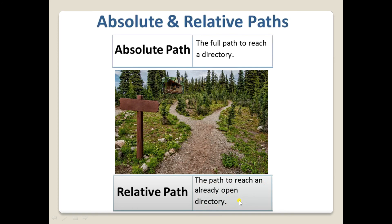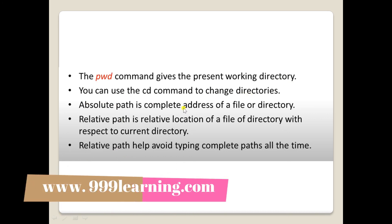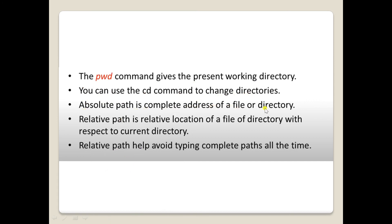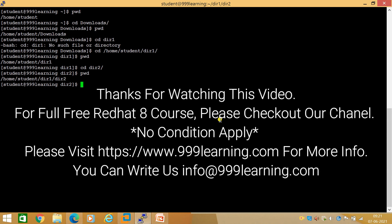To summarize today's session: the pwd command gives the present working directory; the cd command is used to change directories; absolute path is the complete address of a file or directory; relative path is the location of a file or directory relative to your current directory. Relative path helps avoid typing the complete path every time. Thanks for watching — see you again with a new video, bye!